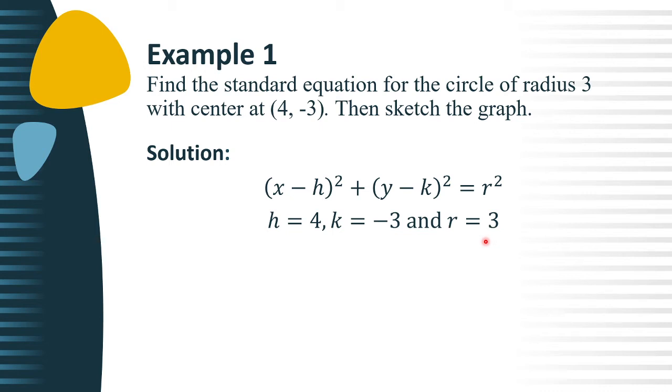Now, substitute the values of h, k, and r to the standard equation: 4 for h, -3 for k, and 3 for r. Then simplify the equation, so we have negative times negative 3, this is positive 3, and 3 squared is equal to positive 9.